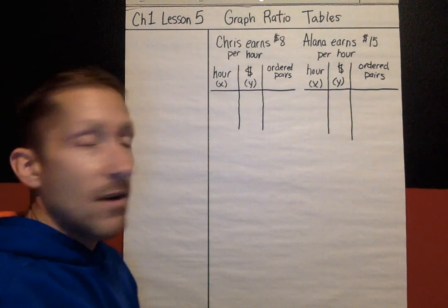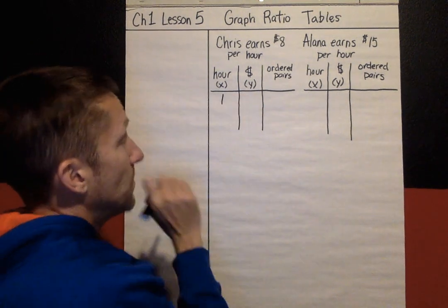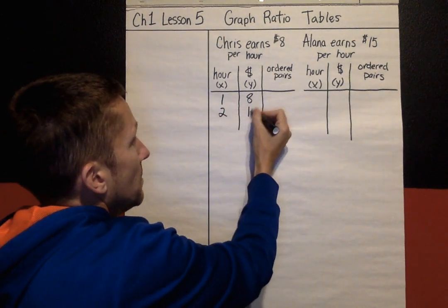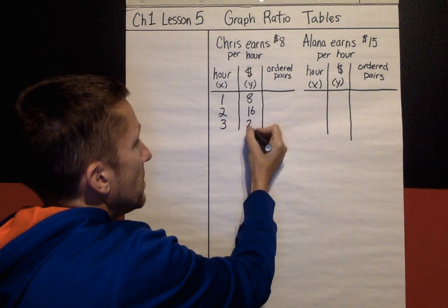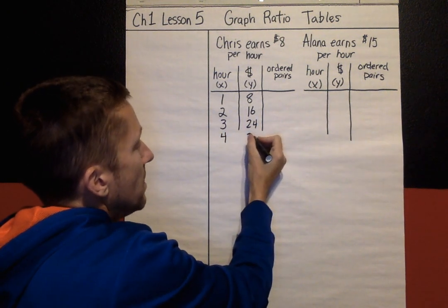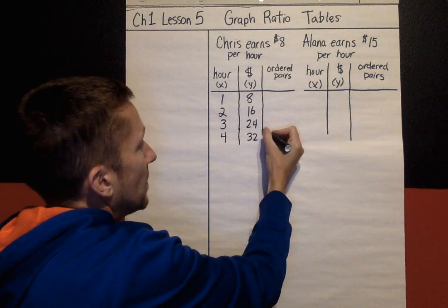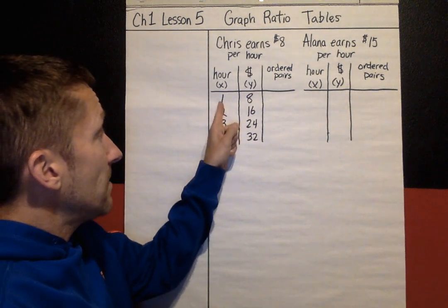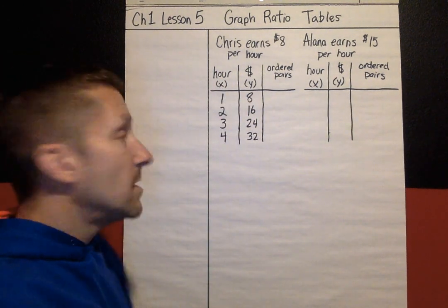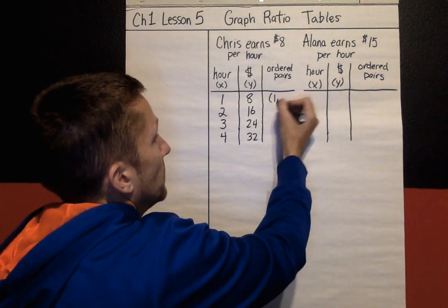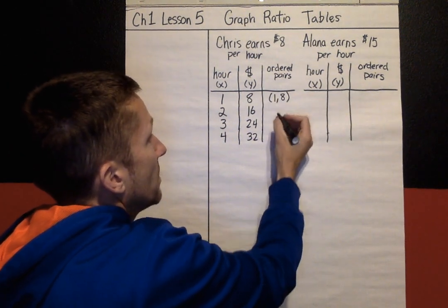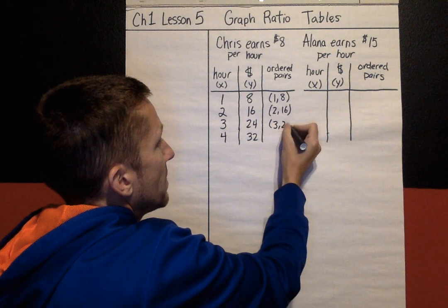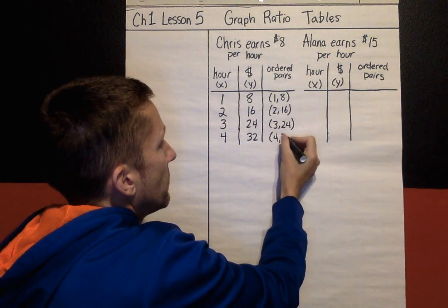Now let's fill in our tables. After one hour, how much money has Chris made? Eight dollars. After two hours, $16. Three hours, $24. After four hours, he's made $32. These values — the X and the Y, the hours and the money — form our ordered pairs. So my ordered pairs look like this: (1,8), (2,16), (3,24), and (4,32).